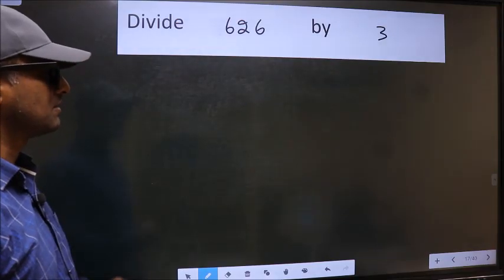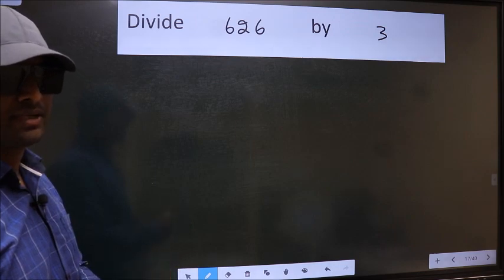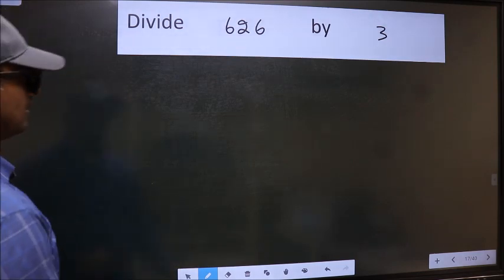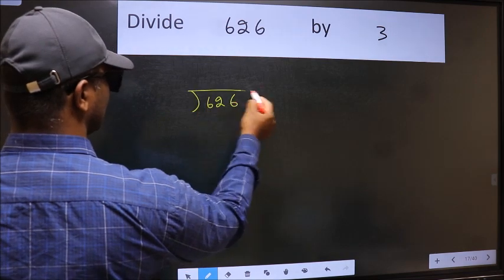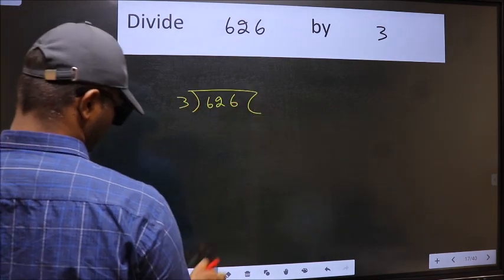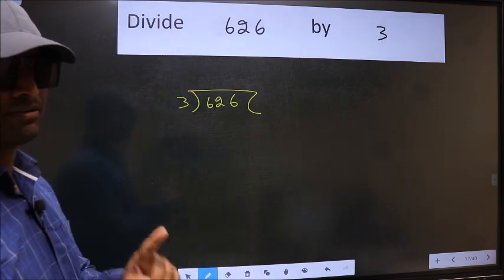Divide 626 by 3. To do this division, we should frame it in this way. 626 and 3 here. This is your step 1.